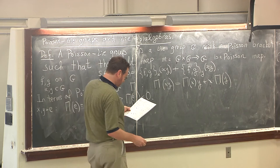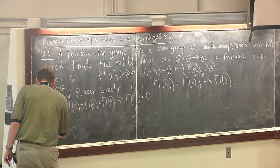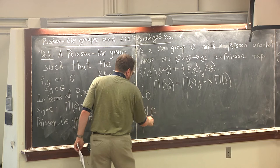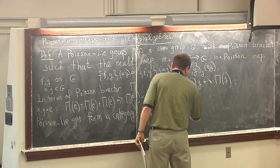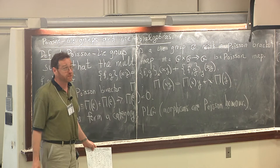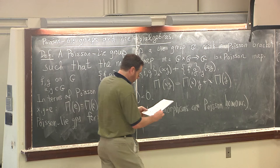Poisson-Lie groups form a category — let me call it PLG — where objects are Poisson-Lie groups and morphisms are Poisson homomorphisms of Lie groups: that is, homomorphisms of Lie groups which are also Poisson maps in the sense previously defined.